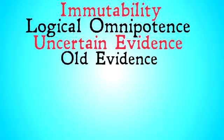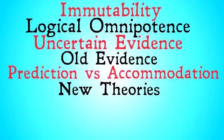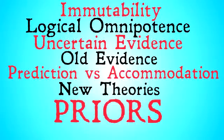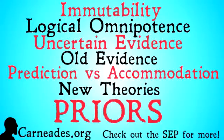That was the problem of old evidence. Next up is prediction versus accommodation, the problem of new theories, the problem of the priors — and that will finish off our series on Bayesian epistemology. Watch this video and more at Carneades.org. Check out the SEP if you are confused or want more information. Stay skeptical, everybody.